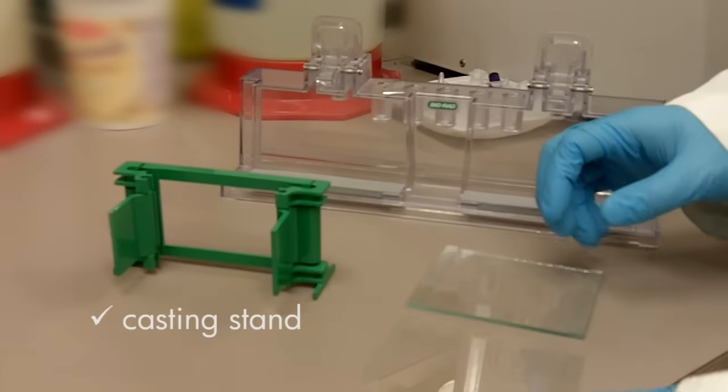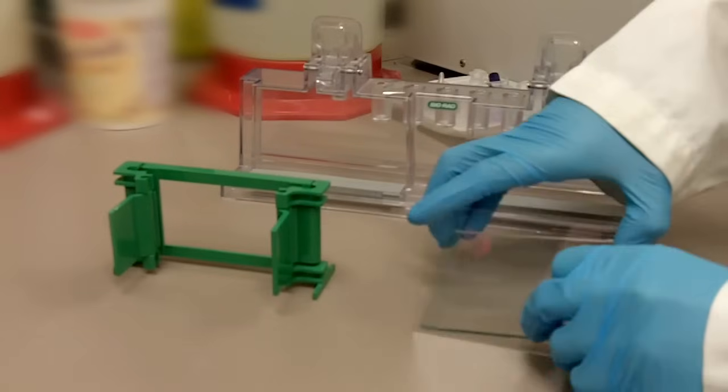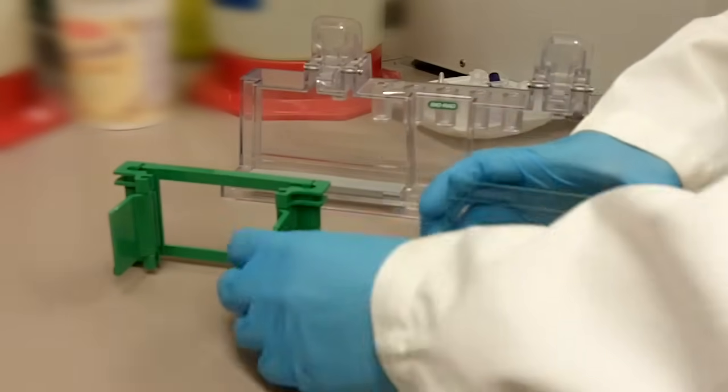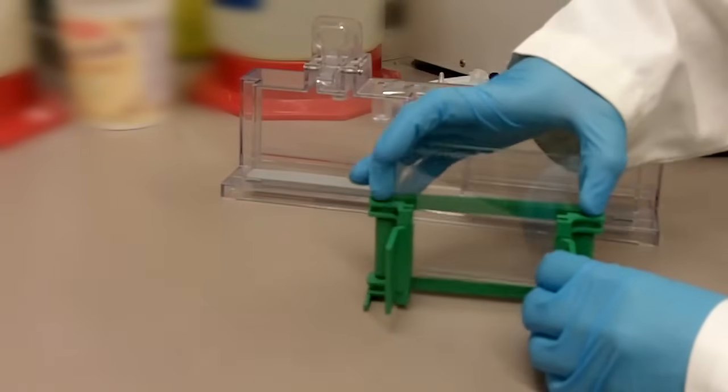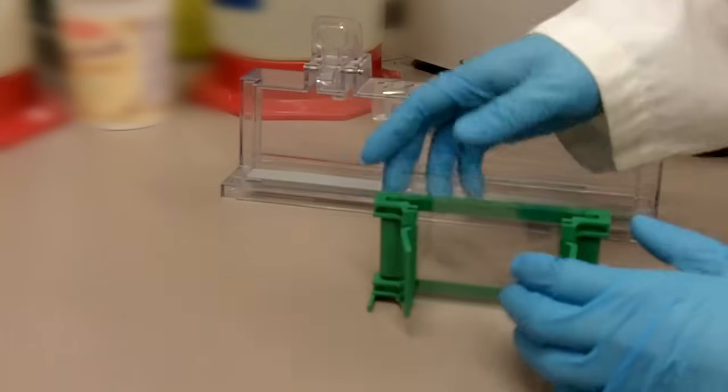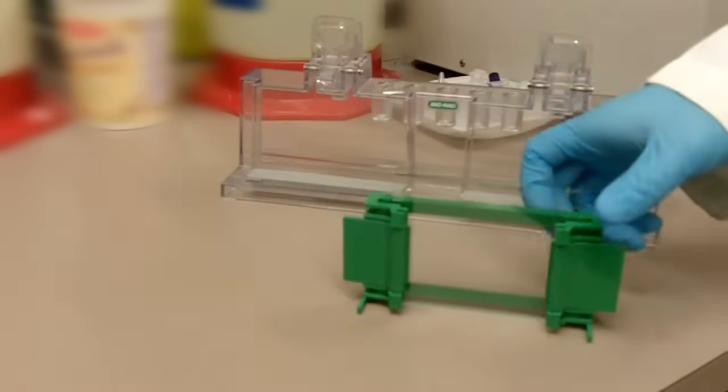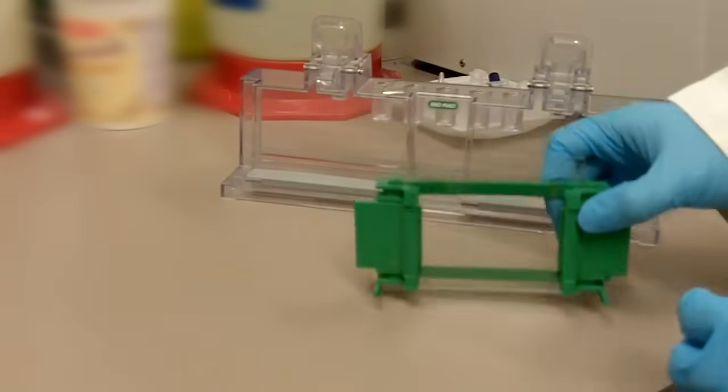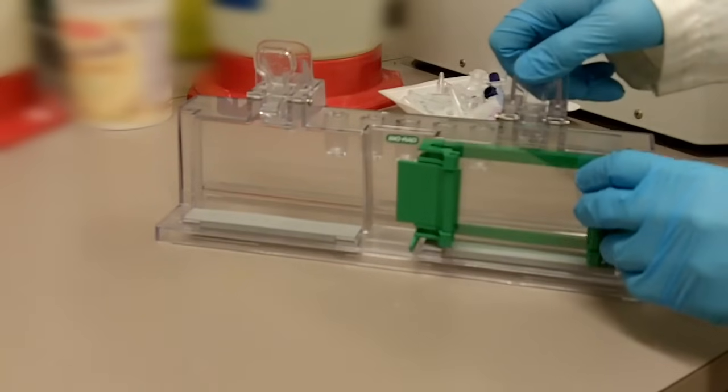What you do here right now is you want to place the short plate in front of the tall plate like that, and then put it into the casting frame. After you put it in the casting frame, you secure it by clamping it and then you want to check that the bottom is flat. When everything is done, then you can put it on the casting stand.